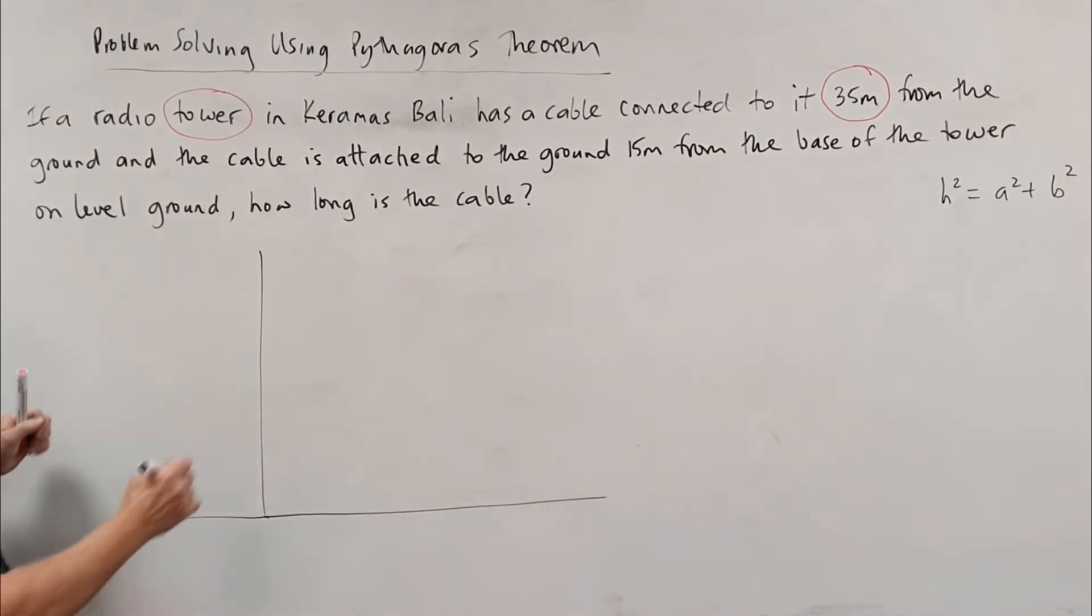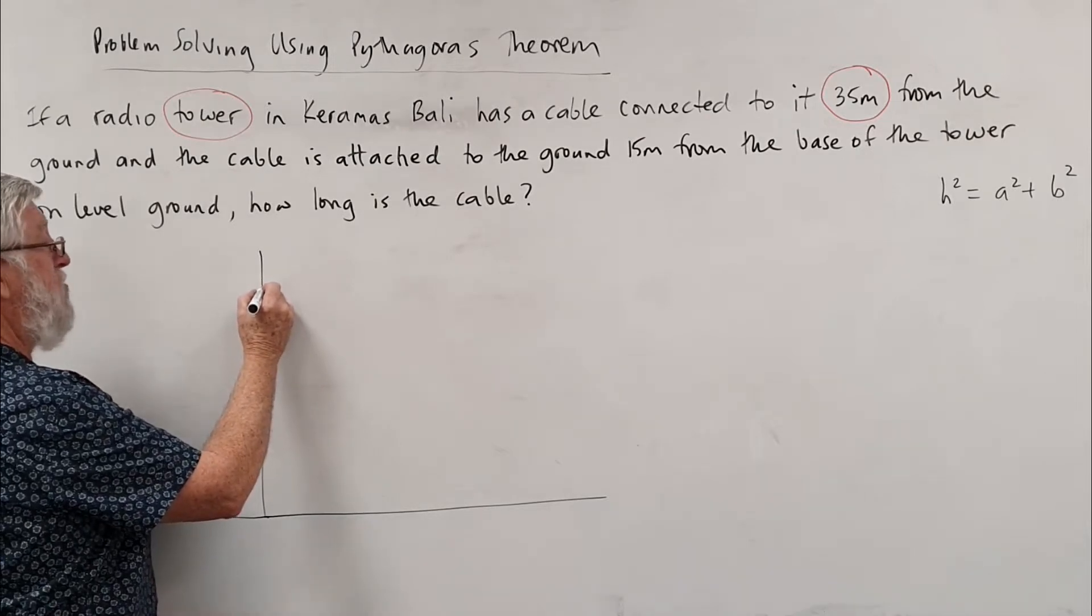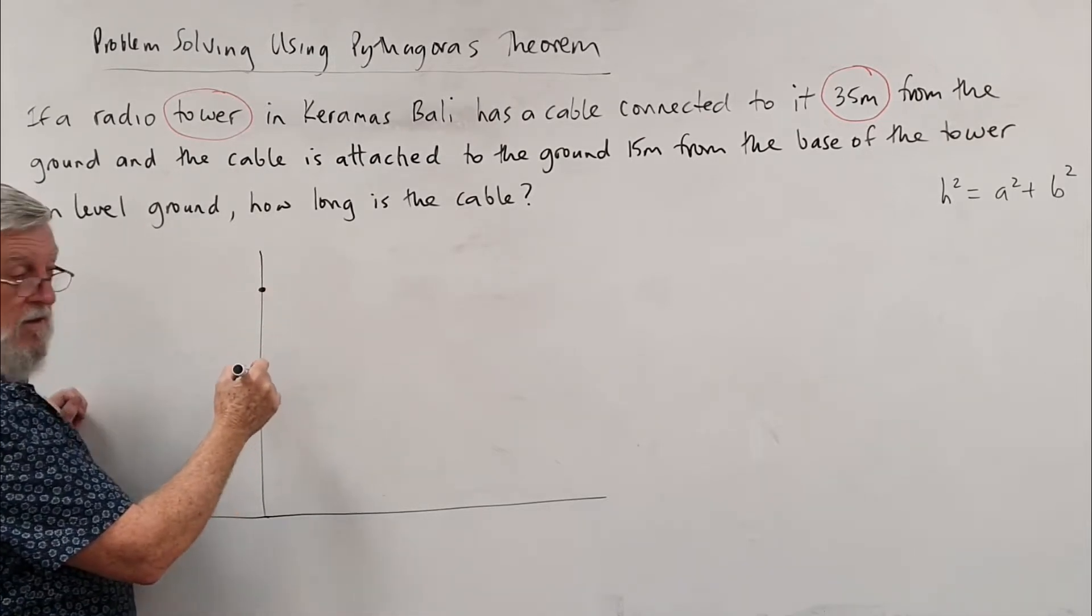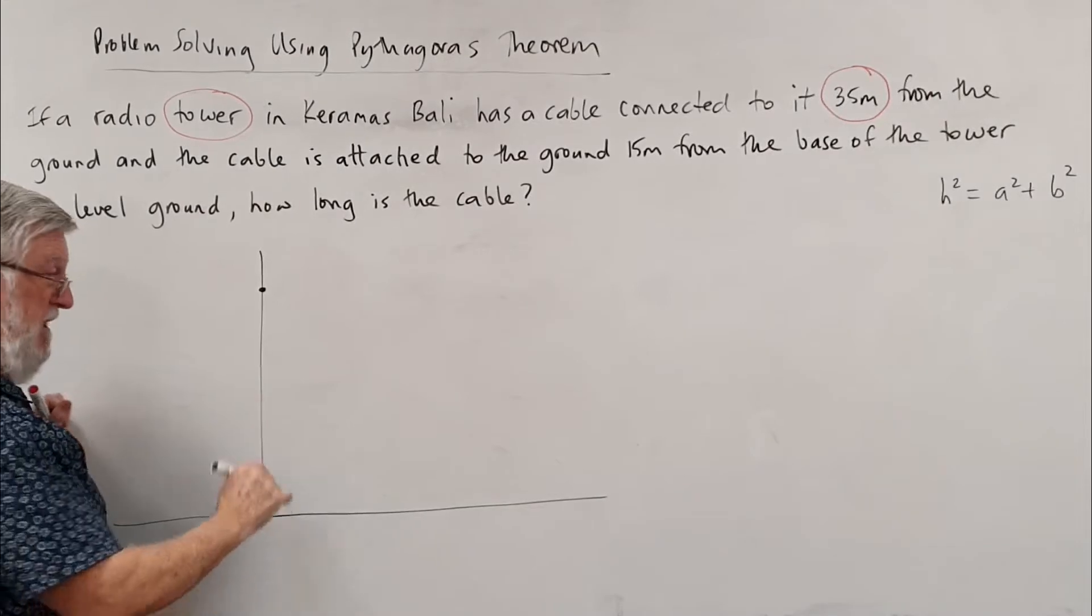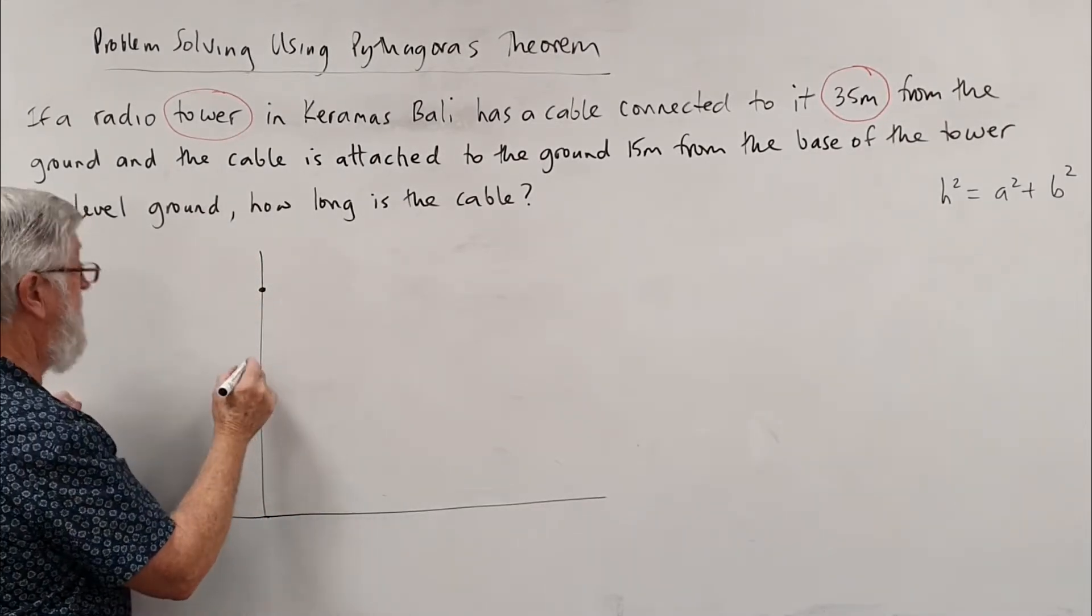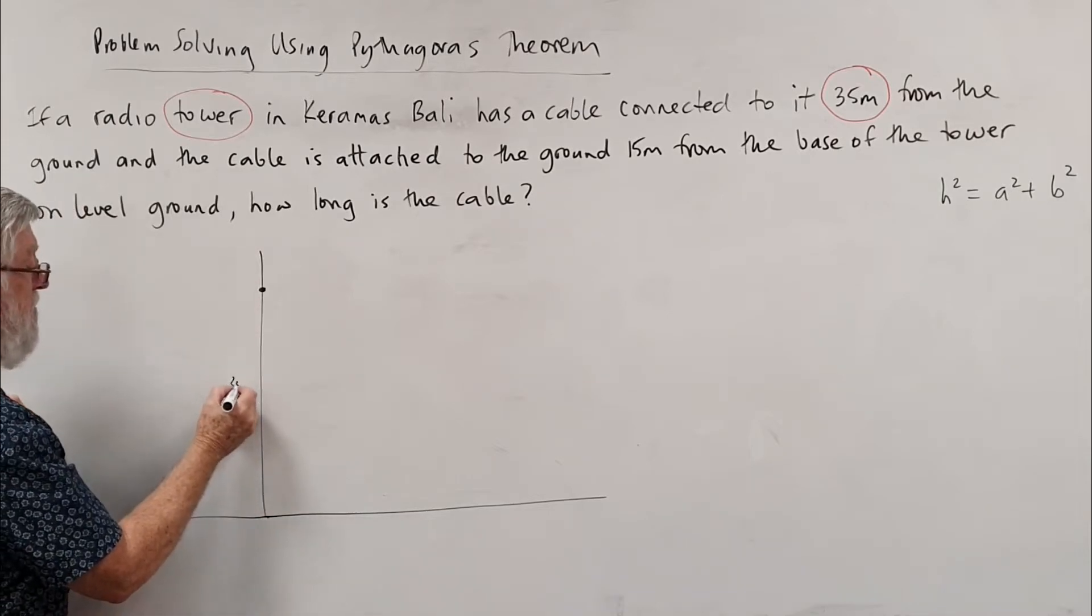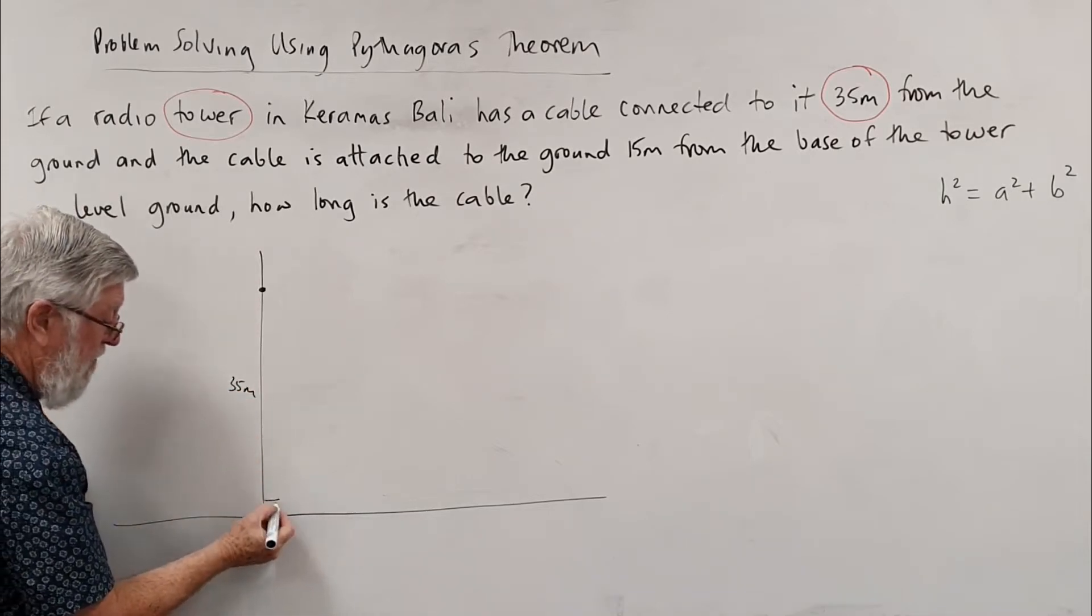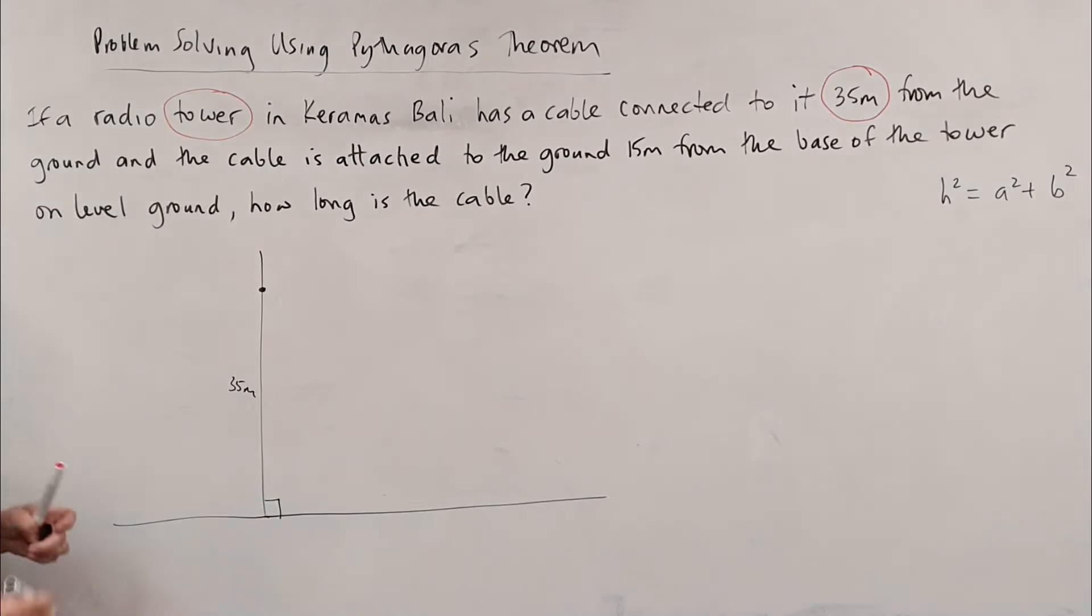A lot of times we're presuming the ground to be level. The cables weren't right at the top, they were down further. They don't want it right at the top—it's often stronger to put it further down. So that distance becomes 35 meters and we've instantly formed a right angle triangle.